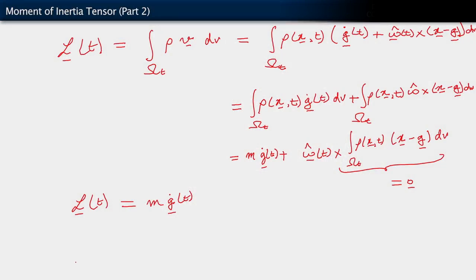Since we are here, let's go ahead and see what happens if we take another derivative and write out the rate of change of linear momentum. There are two ways we can go about it: we could go through the process of the integrals, or we can work directly from here. Working directly, we will see that L̇ as a function of time is equal to m·g̈.